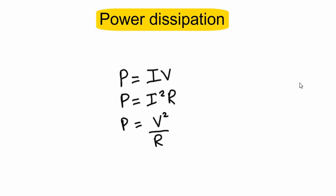Hello. In this short video I'll show you how to use the power dissipation equations: P equals IV, P equals I squared R, and P equals V squared divided by R. I'll show you how to use these equations to work out the power dissipated by a resistor or indeed any other component.